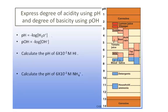Acid and basic solutions are described quantitatively by the concentrations of the hydronium or hydroxide ion in solution. We express these degrees of acidity more conveniently using the calculated values of pH or pOH. pH is just the negative log of the hydronium ion concentration, whereas pOH is the negative log of the hydroxide ion concentration.